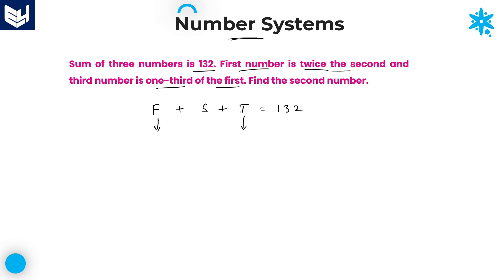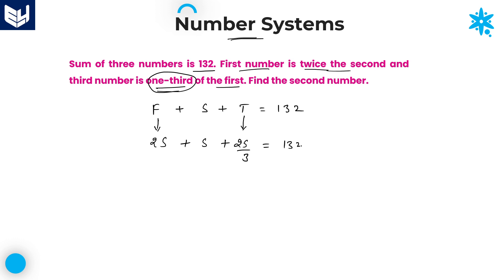According to the question, sum of these three numbers is equal to 132. I want the second number, so I will convert first number and third number into terms of second only. First number is twice the second, so f = 2s. Third number is one third of first number, so t = 2s/3.